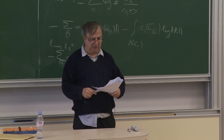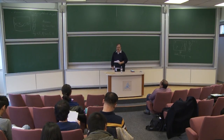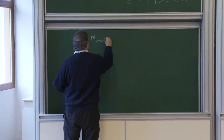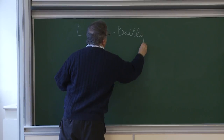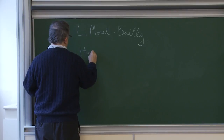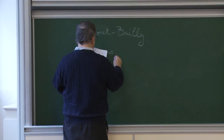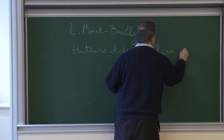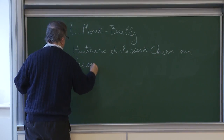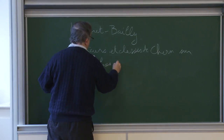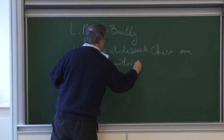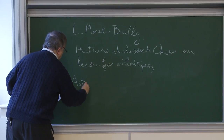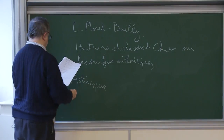We shall need this notion in the second lecture. Now we talk about conjectures. There is an excellent reference, which is an article by Moret-Bailly called 'Hauteurs et classes de Chern sur les surfaces arithmétiques,' appearing in Astérisque number 183, pages 37 to 58.